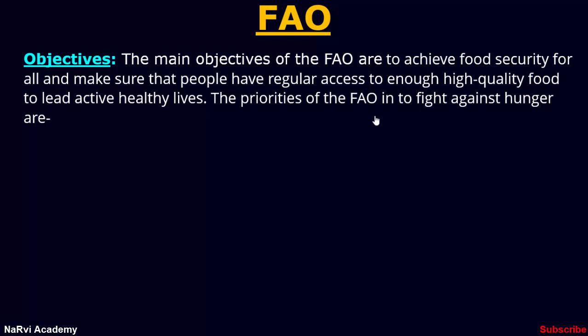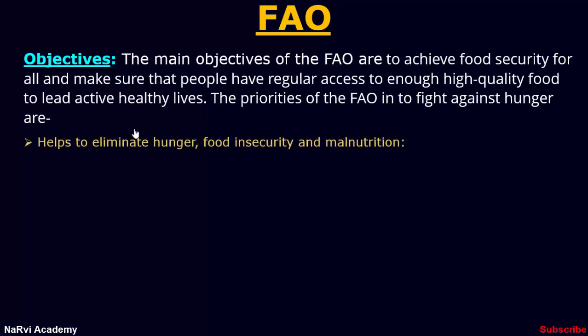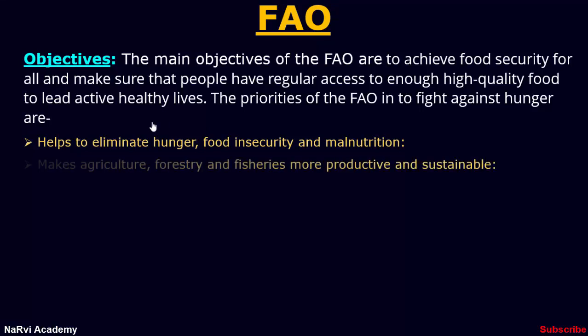The priorities of the FAO to fight against hunger are: It helps to eliminate hunger, food insecurity and malnutrition by contributing to eradicate hunger, by facilitating policies and political commitments to support food security, and by providing up-to-date information about hunger and nutrition challenges and solutions. It makes agriculture, forestry and fisheries more productive and sustainable by promoting policies and practices to support highly productive agriculture sectors while safeguarding natural resources.